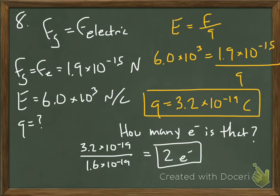So how many electrons is that? Well, we can divide that number by the charge of one electron. And you can see that we have two extra electrons on that oil drop.